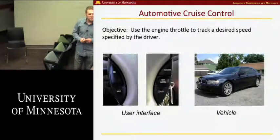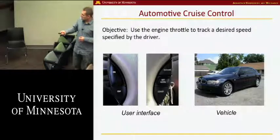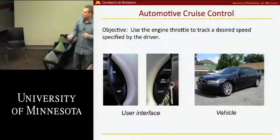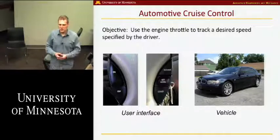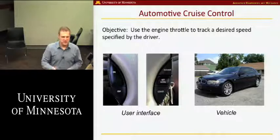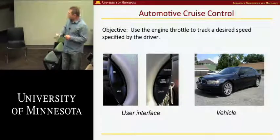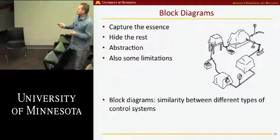Here is an example that many of you are probably very familiar with: cruise control in vehicles. You turn cruise control on when you're driving at 65 miles per hour, and hopefully it should be able to keep you at that level in spite of road variations, changes in slope, potholes, and other disturbances. The key question is how something like this is designed — and here is the story about block diagrams.